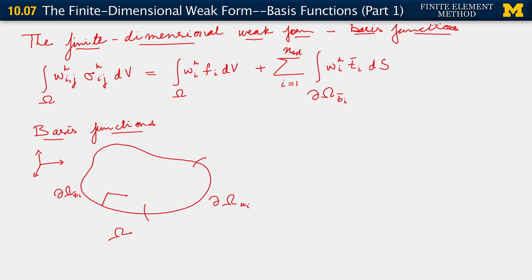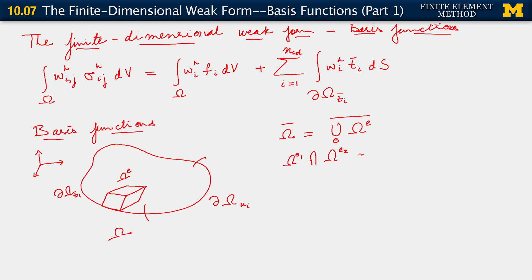The way we do the decomposition is essentially the way we did it in the case of the 3D elliptic problem with scalar variables — the kinds of elements we consider there are admissible here as well. To fix ideas, let's look at hexahedra. So that is an element omega_e. The partition of the domain is as always given by the union over e of all these open element subdomains, whose closure gives us a closure of the body. As always, omega_e1 intersection omega_e2 is the empty set — they're disjoint.